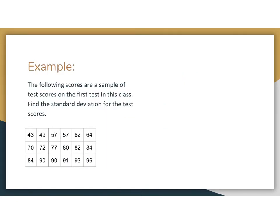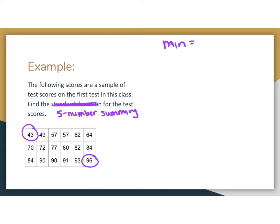In this example, the following scores are a sample of test scores on the first test in this class. I want to find the five-number summary here to find the actual quartiles. Because the data set is already ordered from least to greatest, I know the minimum value is 43 and the maximum value is 96. So I have two numbers in the five-number summary — min is 43, max is 96 — and the other three numbers will come from the quartiles.